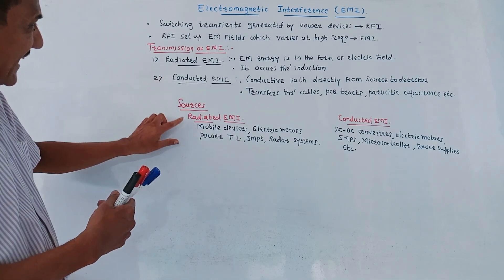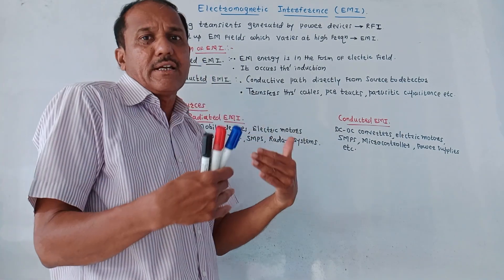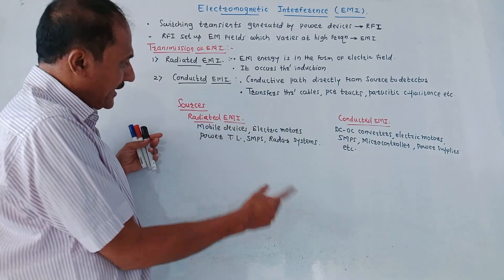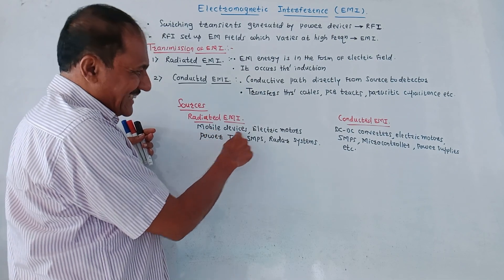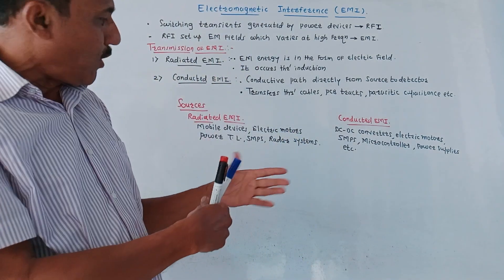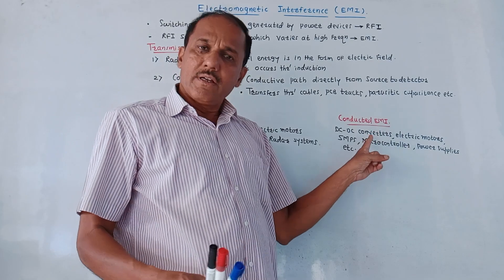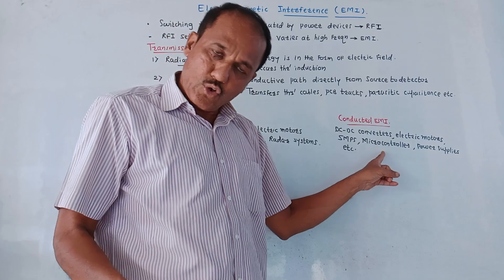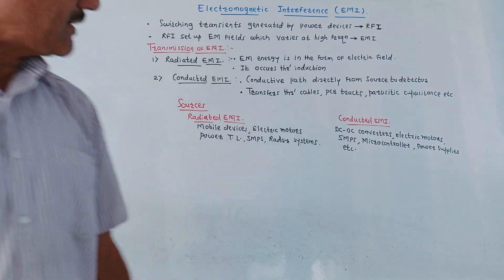What are the sources of radiated EMI? Radiated EMI is generated due to use of mobile devices, electric motors, power transmission lines, SMPS (switch mode power supply), and radar systems. Sources for conducted EMI include DC to DC converters, SMPS, electric motors, microcontrollers, power supplies and so on. These are the sources for radiated EMI and conducted EMI.